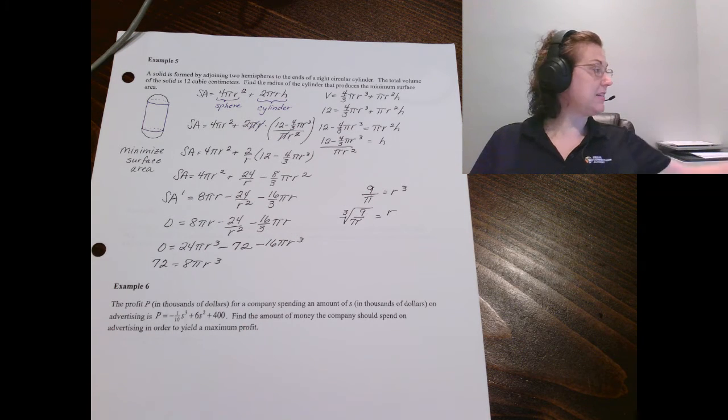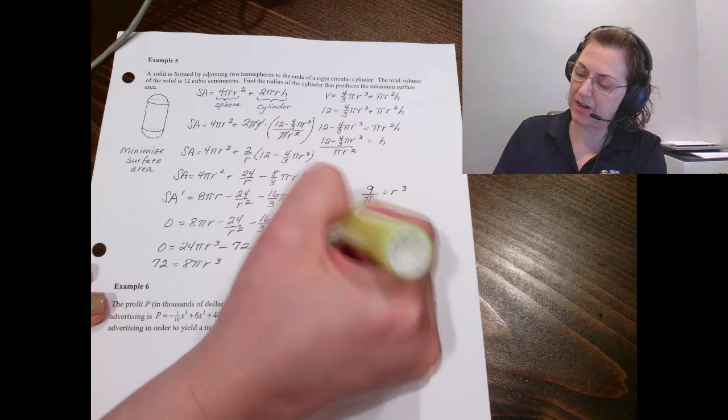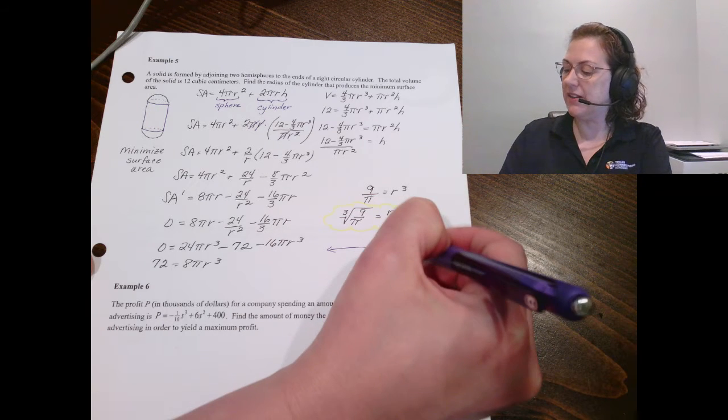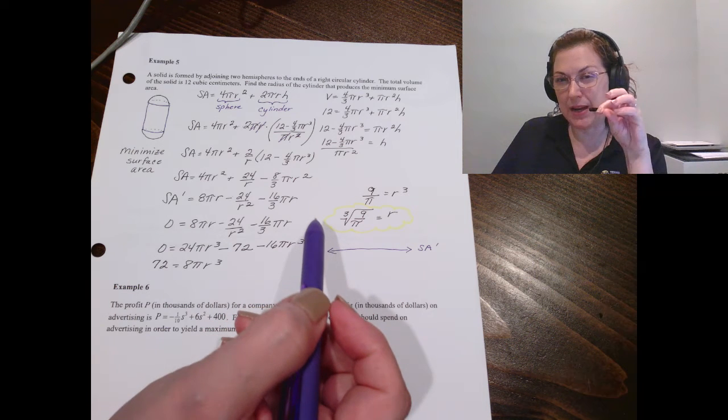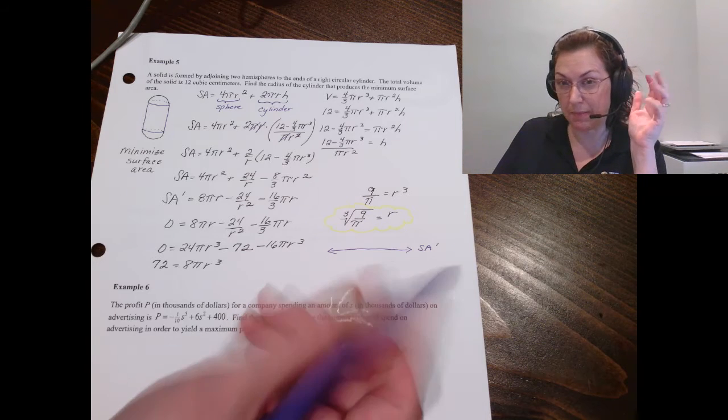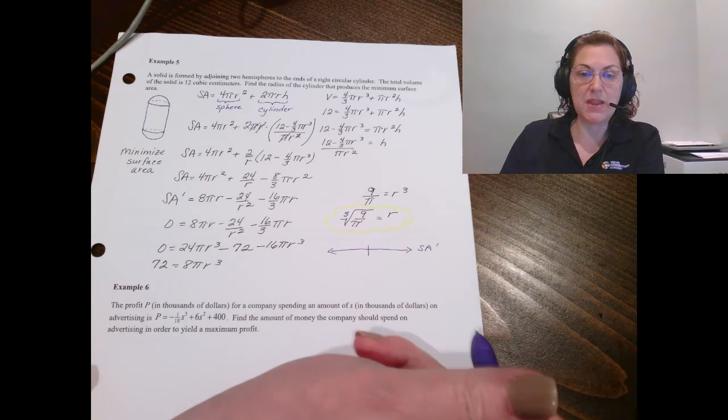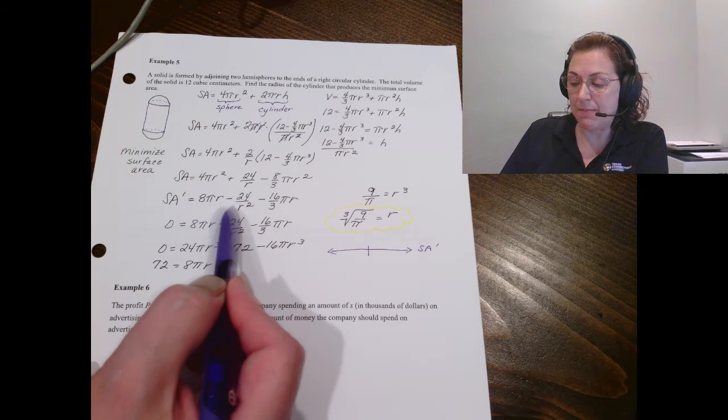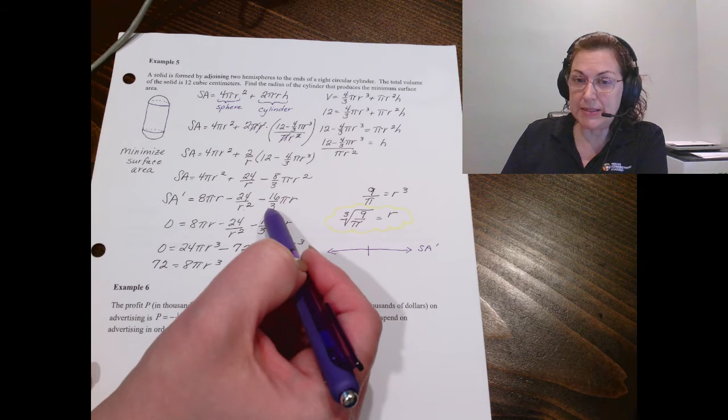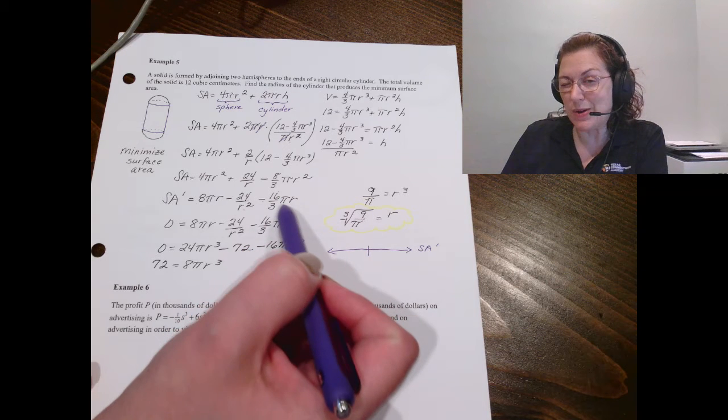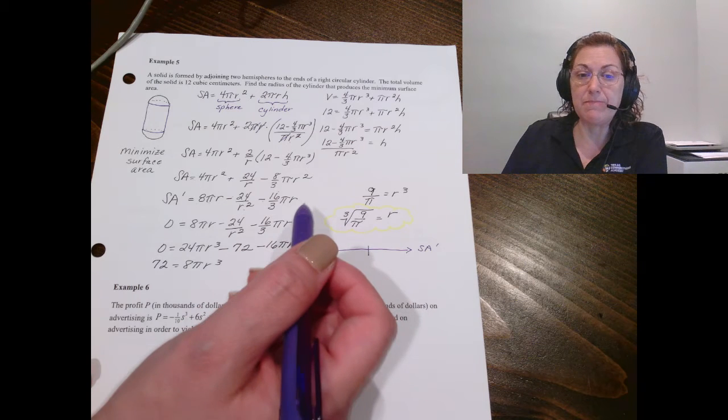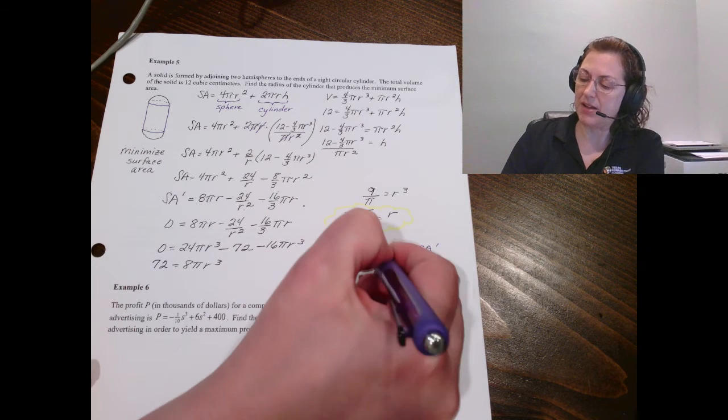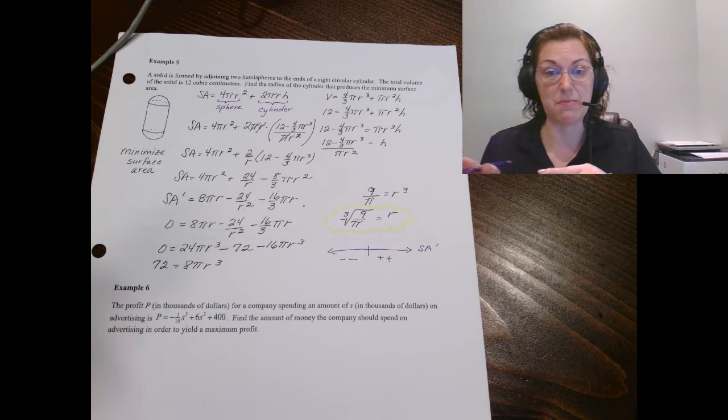It's not pretty friends, but it is the radius that will produce the minimum surface area. Don't forget to check this to make sure it is a minimum. We are checking the surface area. Now 9/π is going to be around three and the cube root of around three is going to be one something, one with a decimal. So if we put that value here in the middle, we can test with one. And we put that in our derivative. So that's 8π - 24, which is positive, minus 16/3π, which gives me a negative here. Then I'll put in two and I end up with a positive there. We do confirm that it is a minimum happening at this radius.